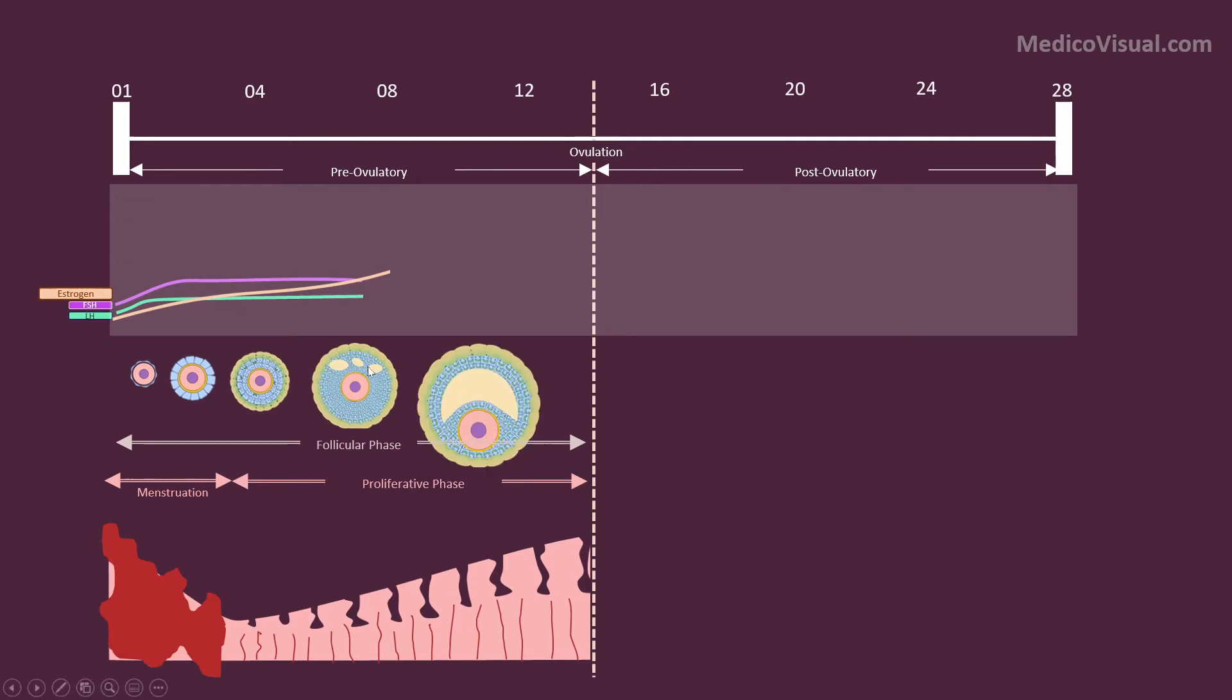These small fluid-filled cavities coalesce to form the antrum, and the size of the follicle further increases. It produces more and more estrogen, so estrogen levels start rising.